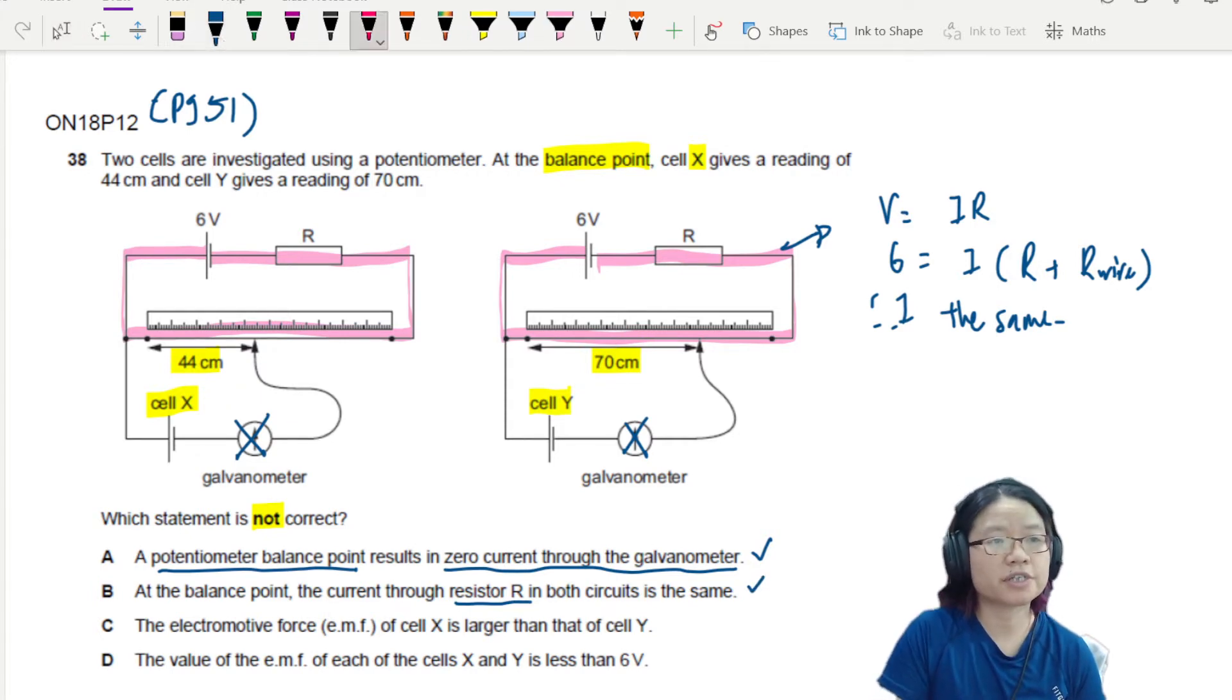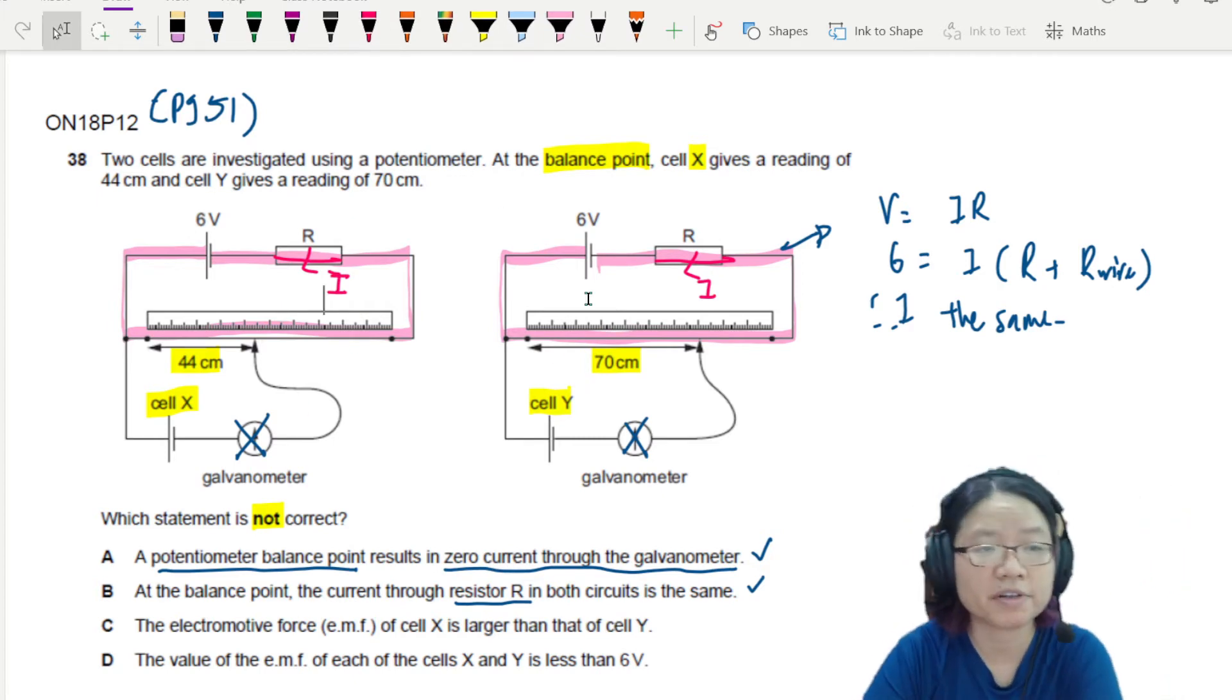The current through the resistor R for both cases will be the same. Because there's no place. Number one, there's no branches. And number two, the value of R and the value of V is the same.